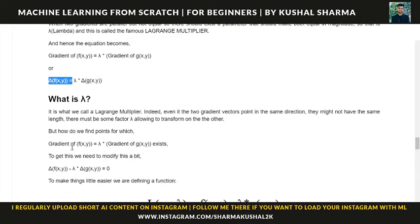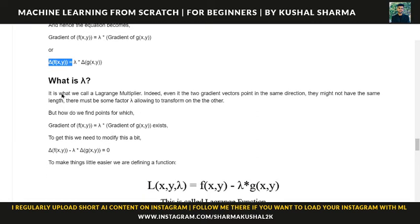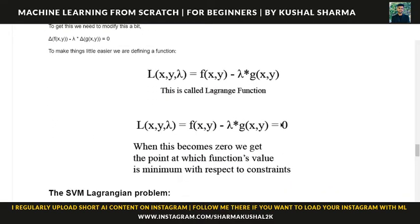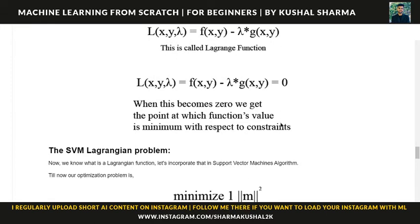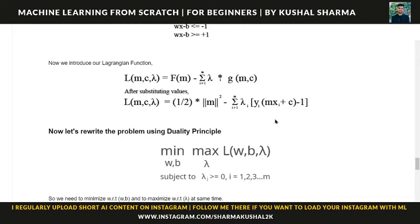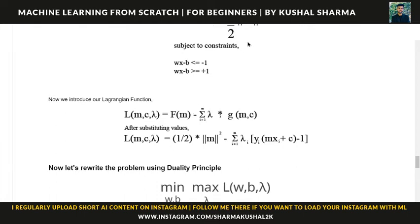Gradient of f(x,y) equals lambda times gradient of g(x,y). Then we equated the whole equation to zero, taking everything to the left side. After that we were able to find the Lagrange function. Using this Lagrange function we formulate the SVM Lagrangian problem. We substitute the value of half the norm of w squared in place of f(w), and the constraint lines in place of g(w,c).